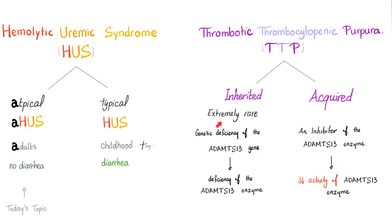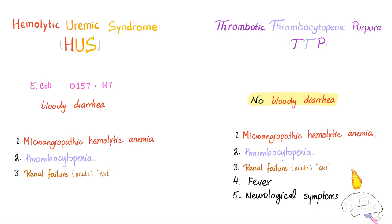In inherited TTP, there is a genetic deficiency — we do not have ADAMTS13. In acquired TTP, we have ADAMTS13 but there is an inhibitor, so it's basically useless. Hemolytic uremic syndrome — the typical form — has the triad of microangiopathic hemolytic anemia, thrombocytopenia, and acute renal failure with bloody diarrhea and E. coli.